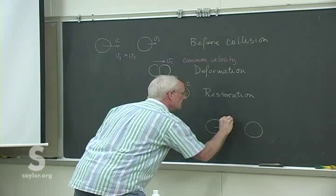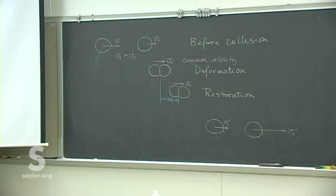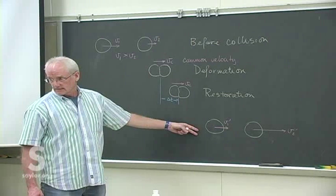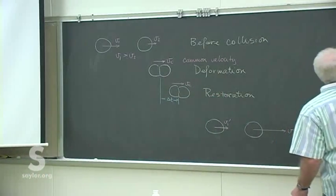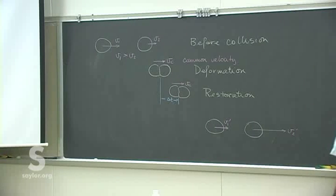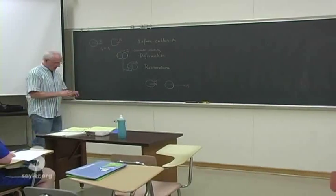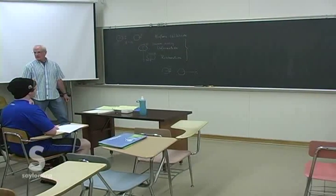After the restoration phase, each object has some subsequent velocity. Typically V2 is now departing with a greater velocity. So we have four phases: before collision, deformation, restoration, and after collision. What we're interested in is the collision period itself, because that sets everything up. We assume velocities are constant outside of collision, so we focus on the impact — during that very short collision period, the velocities might change significantly.